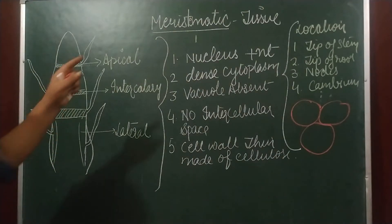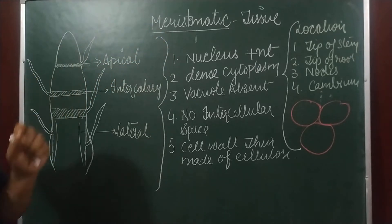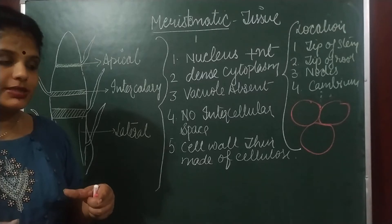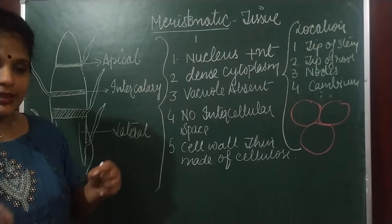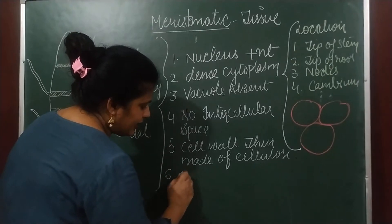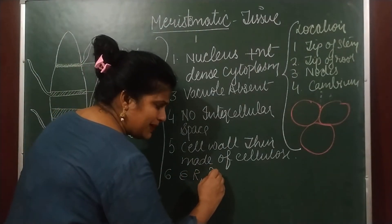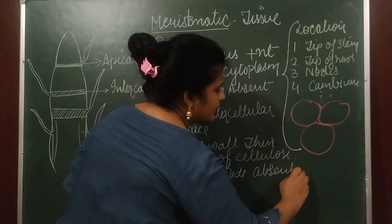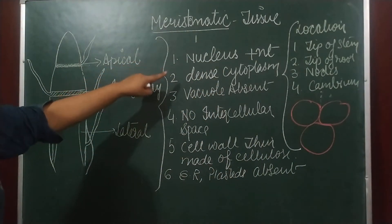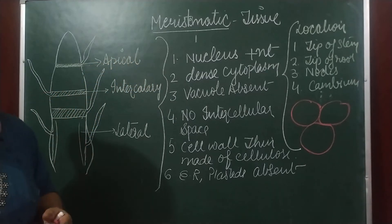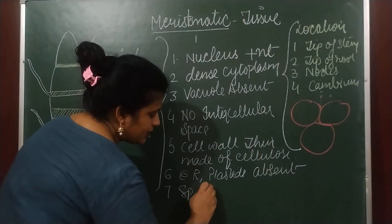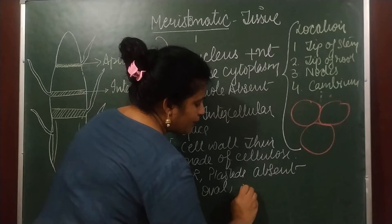Because they have the ability to divide, they do not have organelles like endoplasmic reticulum or plastids — if endoplasmic reticulum is present, the cell could not divide easily. So generally, cell organelles like endoplasmic reticulum and plastids are absent because these cells do not need to do any function other than division. Whatever is required for division — nucleus and cytoplasm — is already present. In terms of shape, they could be spherical, oval, or polygonal.